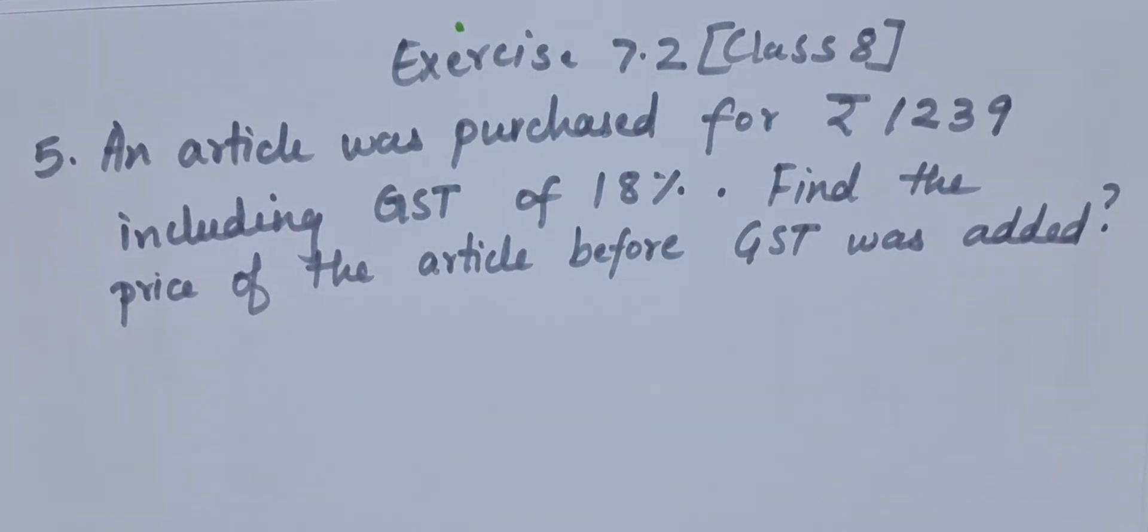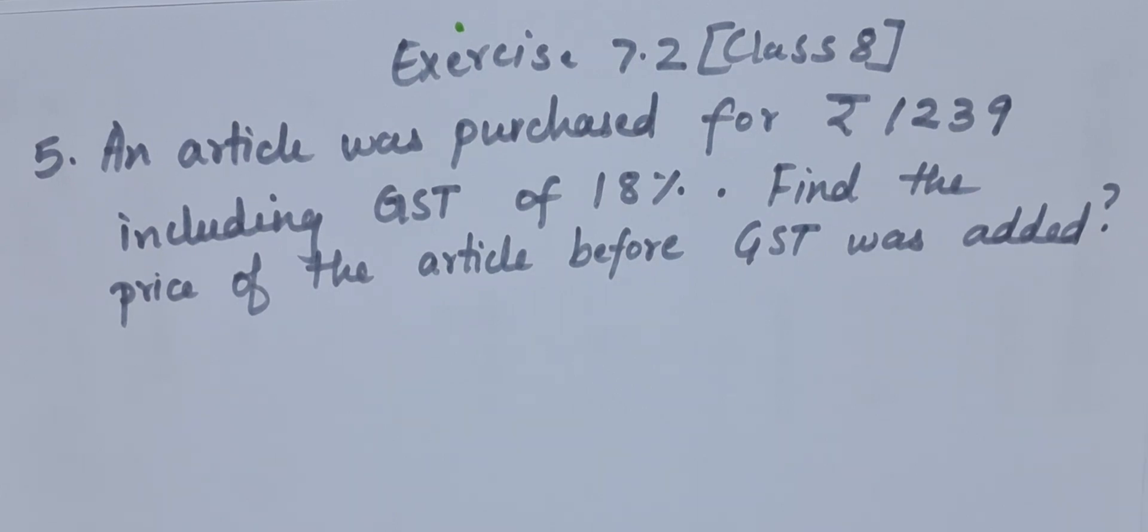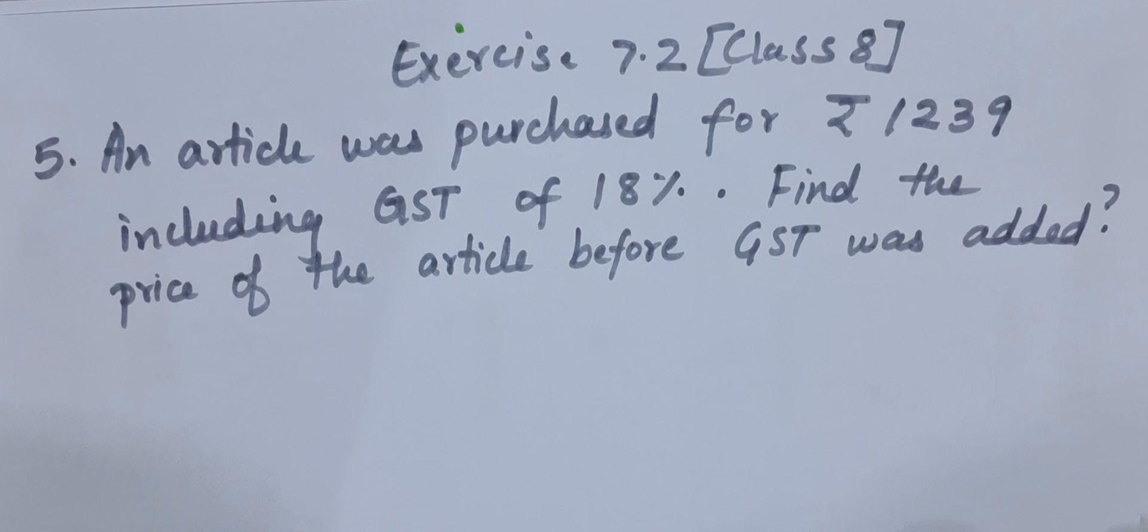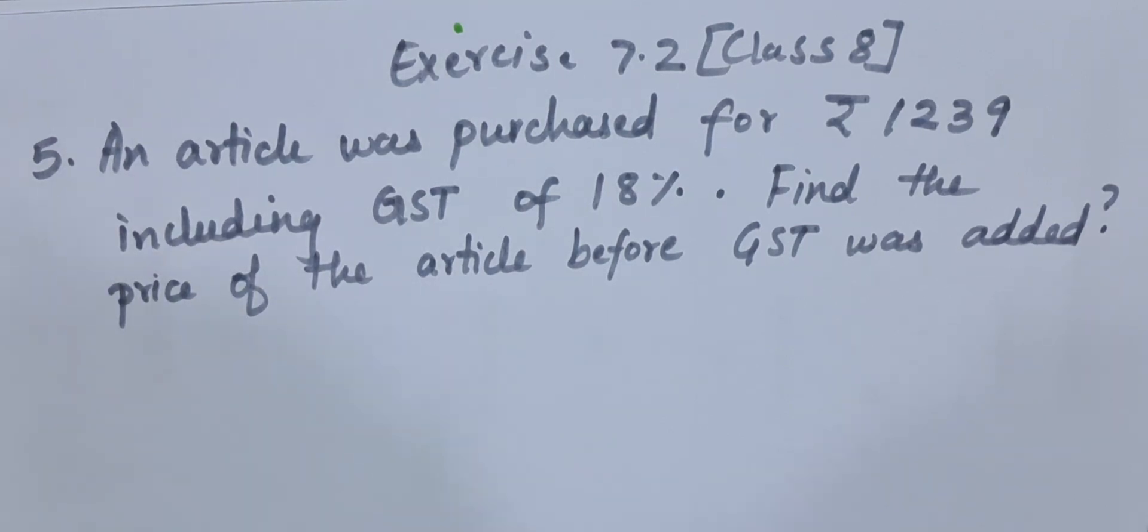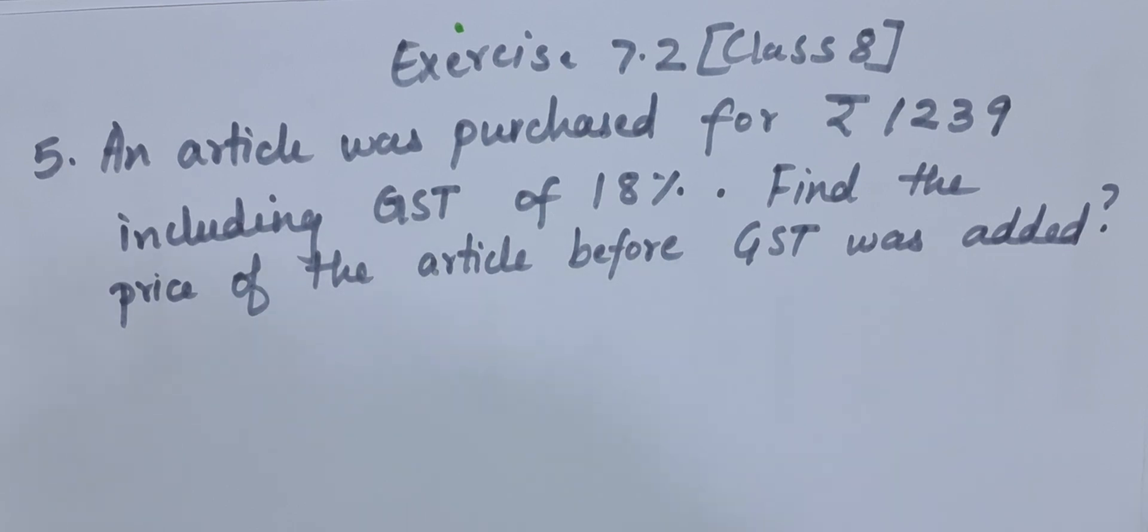Here they are telling us that an article was purchased and they paid 1239 rupees for that article. In that, 18% of tax was already included. Now they are telling us to find the price without the tax, that is the price of the article when the tax was not added.